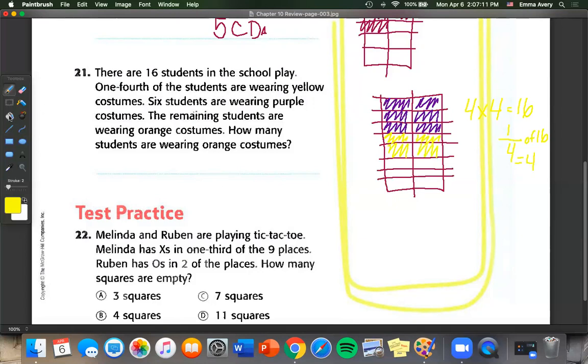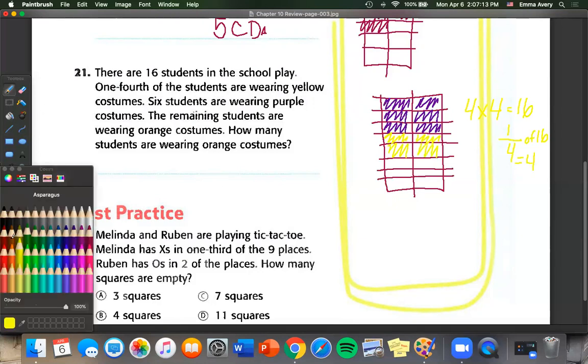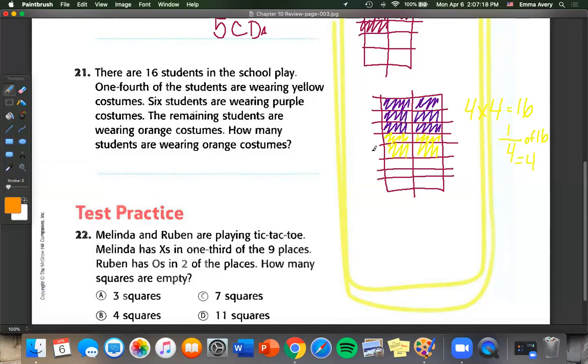And that leaves the rest of the students are wearing orange. So we can fill in the rest of these orange. One, two, three, four, five, six. So six students are wearing orange.